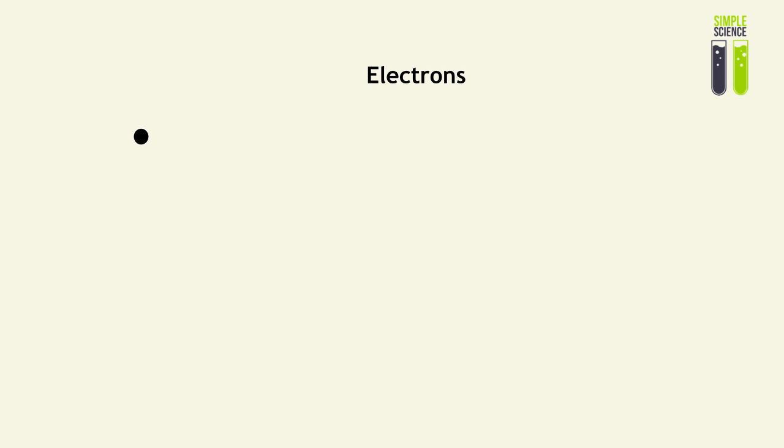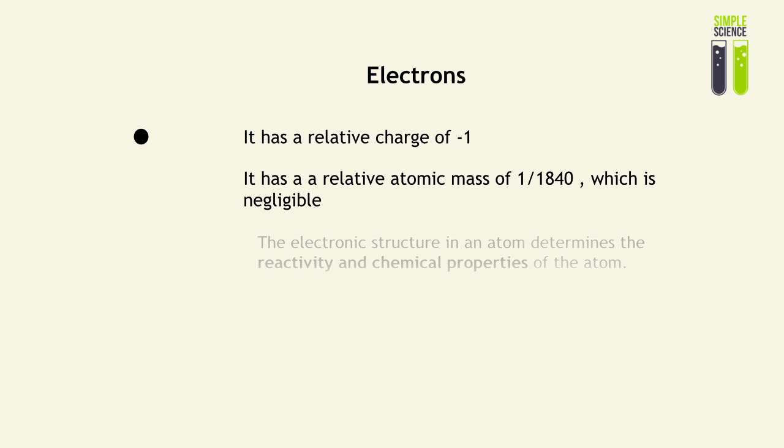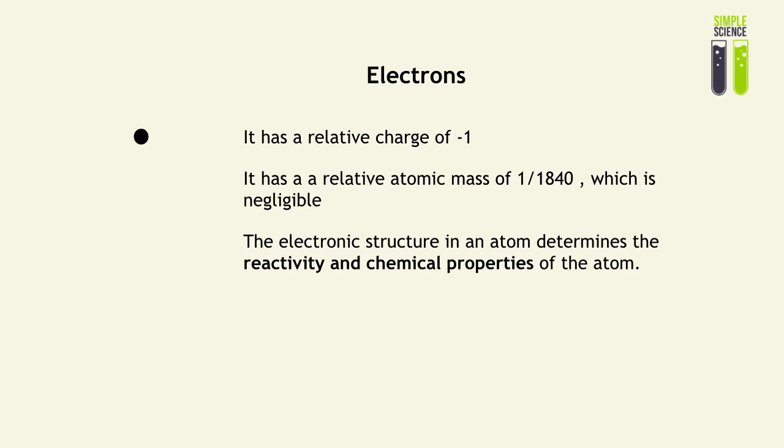And the next particle is the electron. And it has a relative charge of minus one. So that is why we said an atom is neutrally charged because it has the same number of protons as electrons. So the total charge of an atom will cancel out. And as we said before, the relative atomic mass of an electron is negligible compared to that of a proton, which it is about 1 over 1840th times less than a proton. And therefore, it is seen as negligible. And in chemistry, electrons are fundamental because the structure in which electrons are basically placed in an atom in its energy shells determines the reactivity and chemical properties of an atom, which we will look at later on.